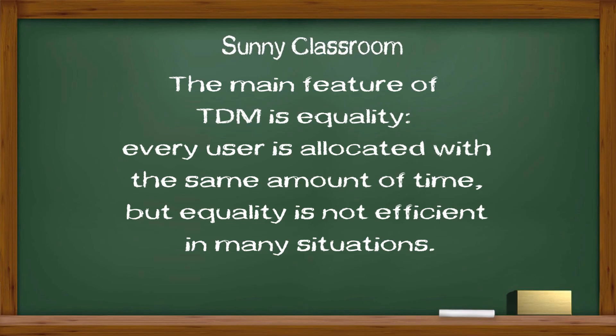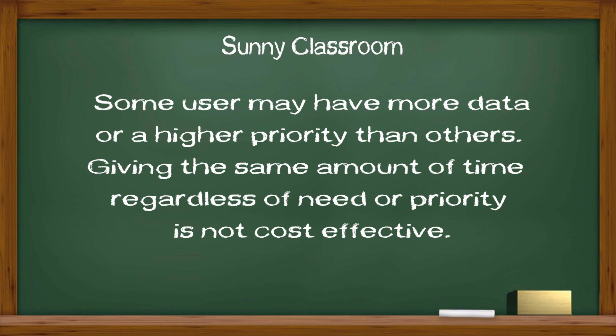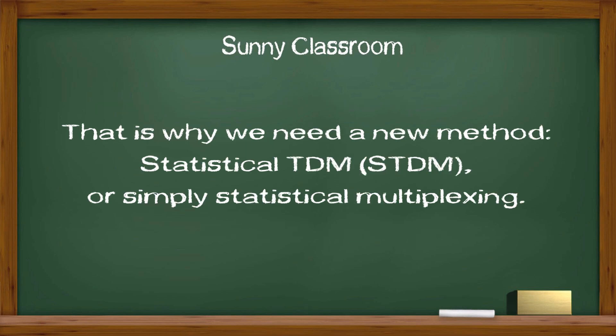The main feature of TDM is equality — every user is allocated the same amount of time. But equality is not efficient in many situations. For example, some users may have more data or higher priority than others. Giving the same amount of time regardless of need and priority is not cost-effective. That's why we need a new method: statistical TDM, or simply statistical multiplexing.